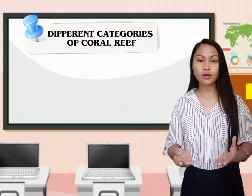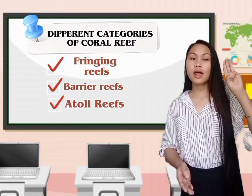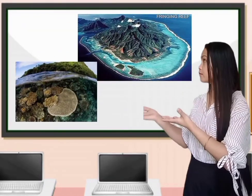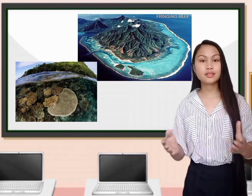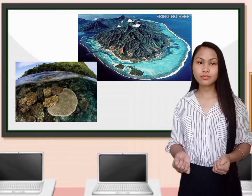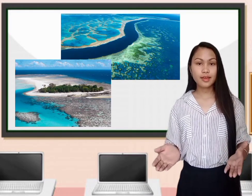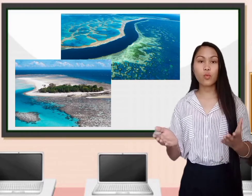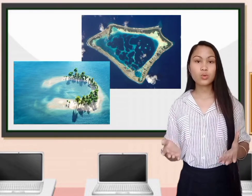Coral reefs have different categories, namely the fringing reefs, barrier reefs, and coral atolls. The fringing reef is the most common type, located along the seashore of continents or islands. The barrier reef, instead of growing out from the shore, is separated from the land by an area of water called a lagoon. The atoll is a circular reef that includes a lagoon.